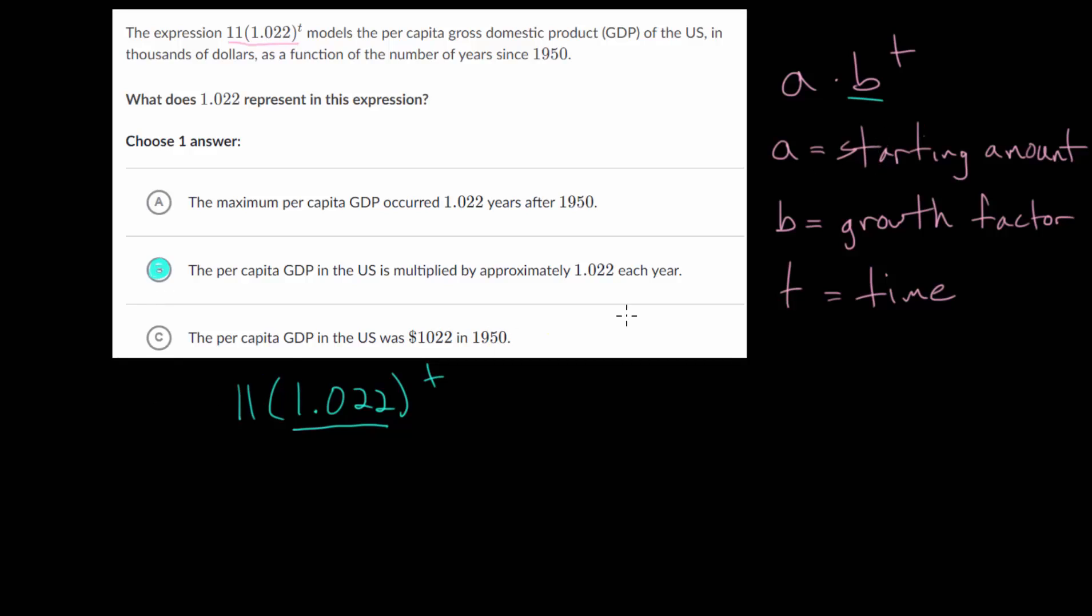We also want to understand why this is the formula. So to do that, let's just plug in a few different t values and see what happens. When t is 0, we have 1.022 raised to the 0 power. Anything raised to the 0 power is just 1, so this is just 11. You can see that 11, it does make sense that that's the starting amount.